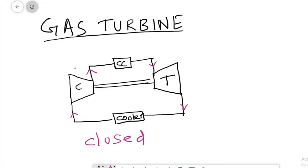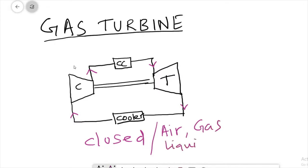In the closed type gas turbine, we can use any kind of fluid — it can be air, any gas, or any kind of liquid. So different working fluids are possible in the closed type gas turbine.